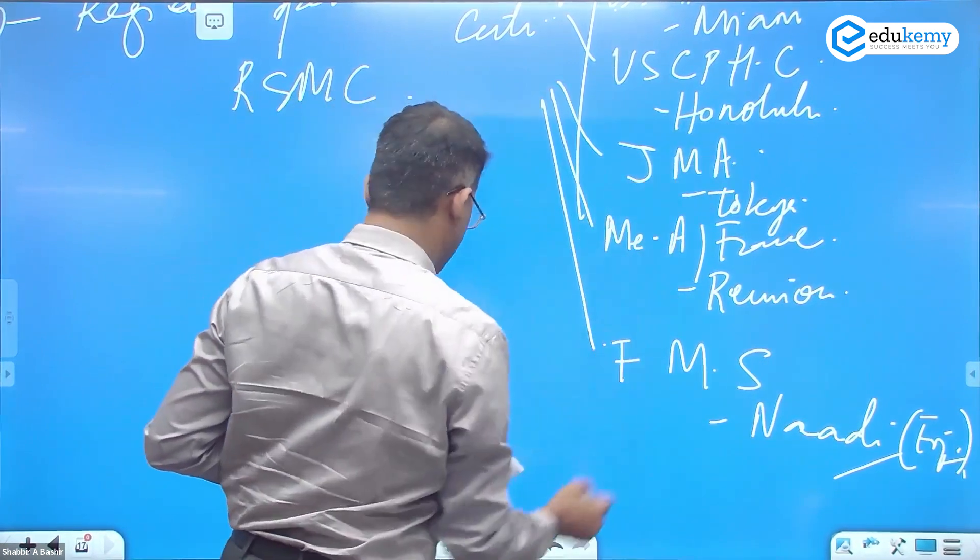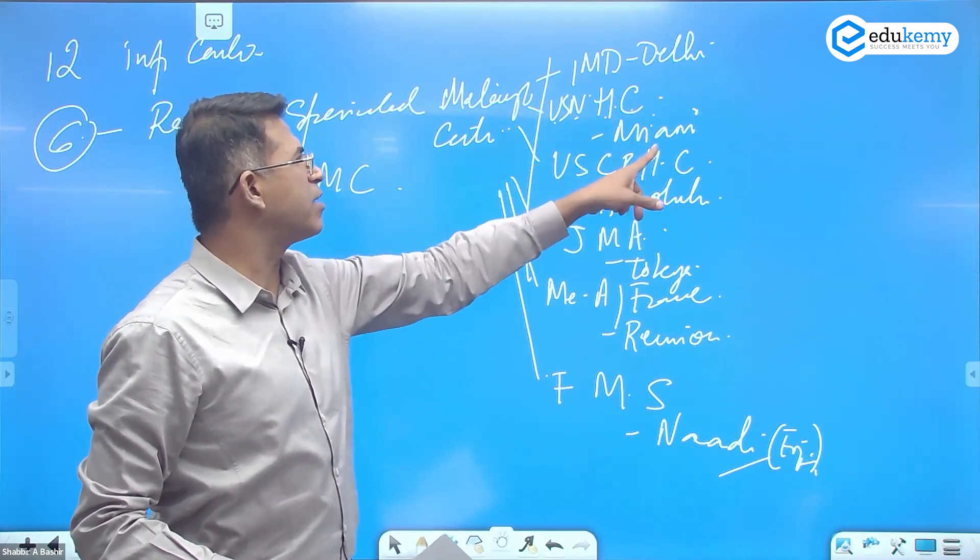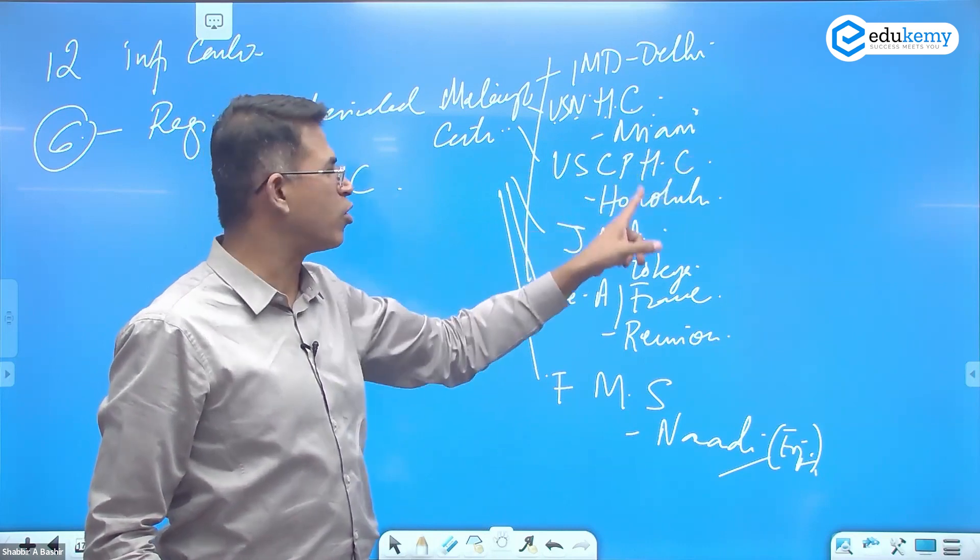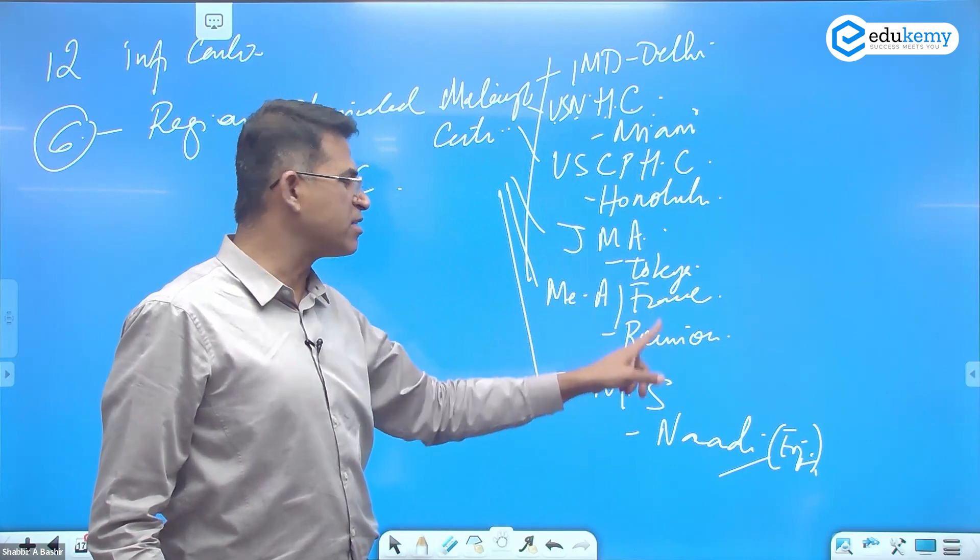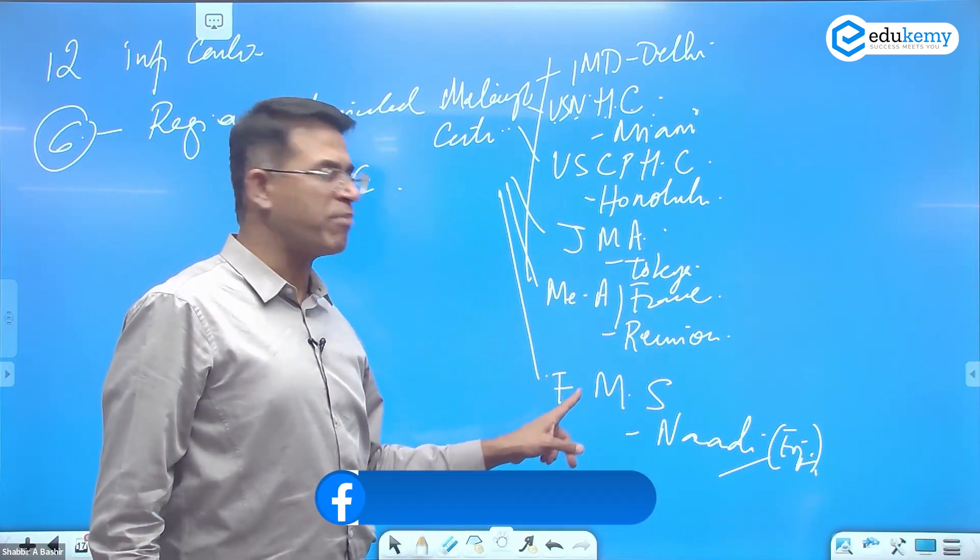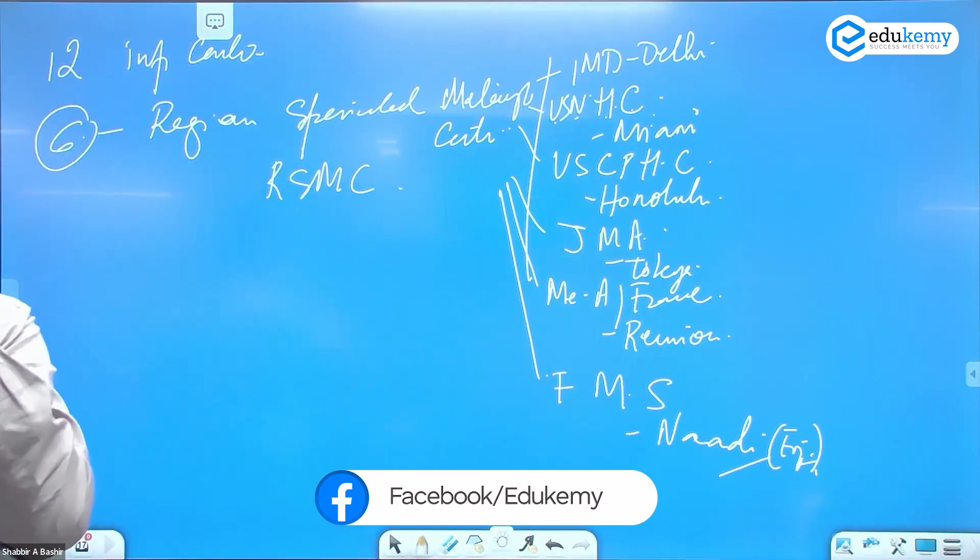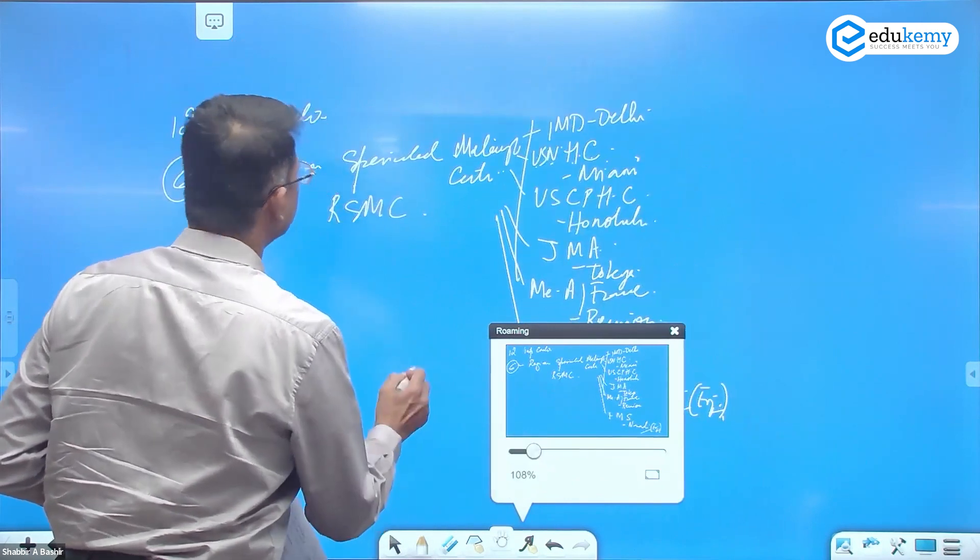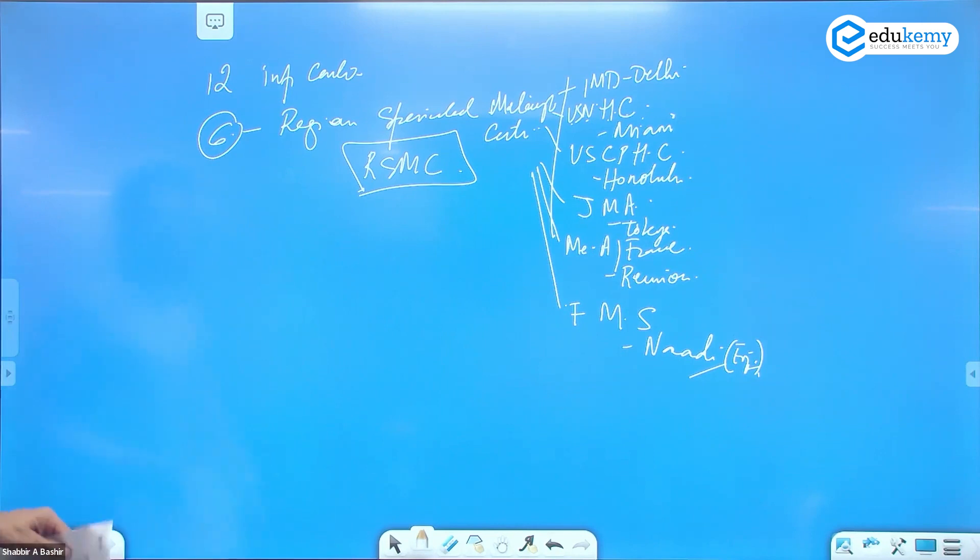So these are six regional specialized meteorological centers: IMD Delhi, US National Hurricane Center Miami, US Central Pacific Hurricane Center Honolulu, Japan Meteorological Agency Tokyo, Meteorological Agency of France Reunion Islands, and Fiji Meteorological Service Nadi on the Fiji Islands.